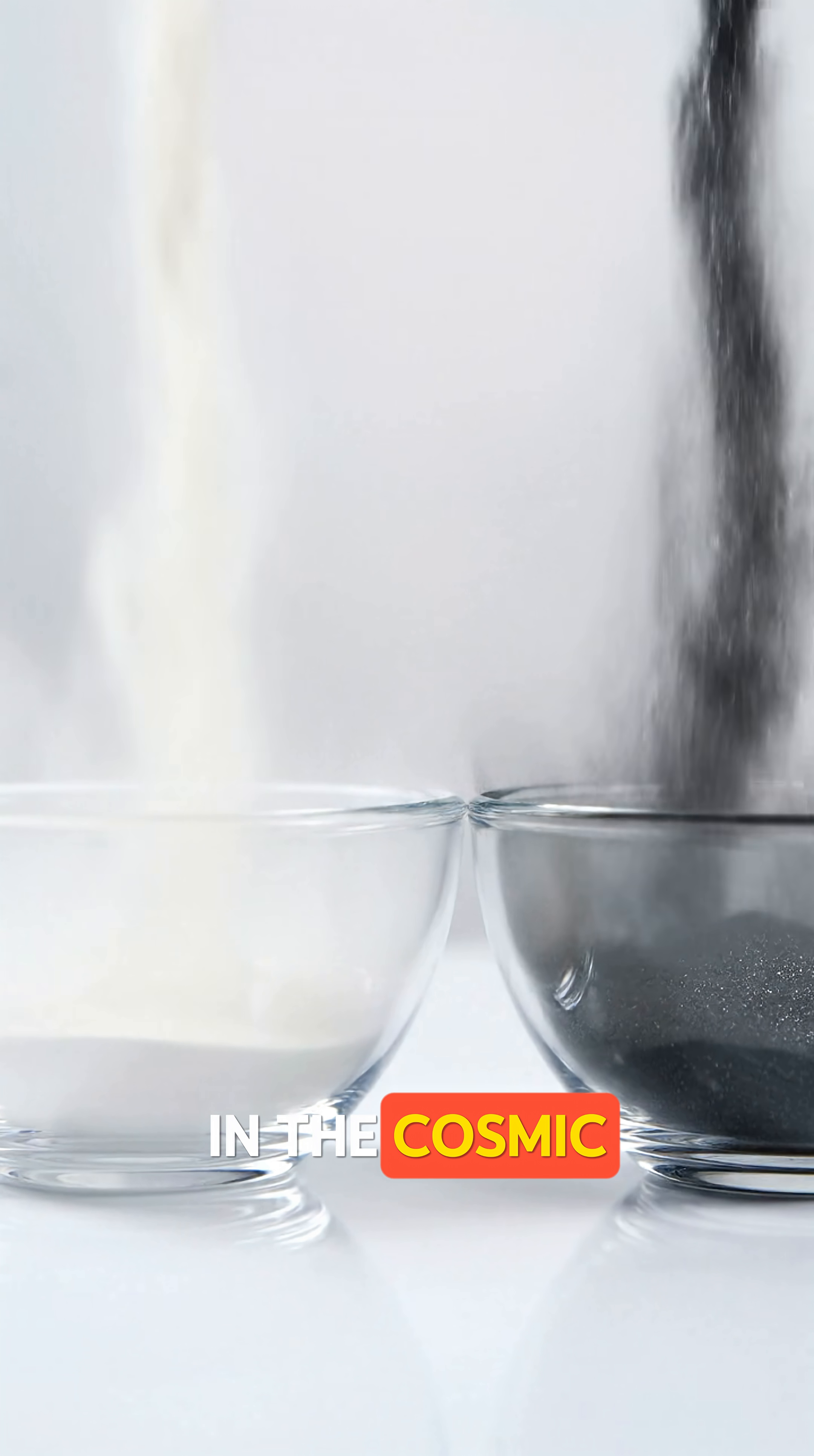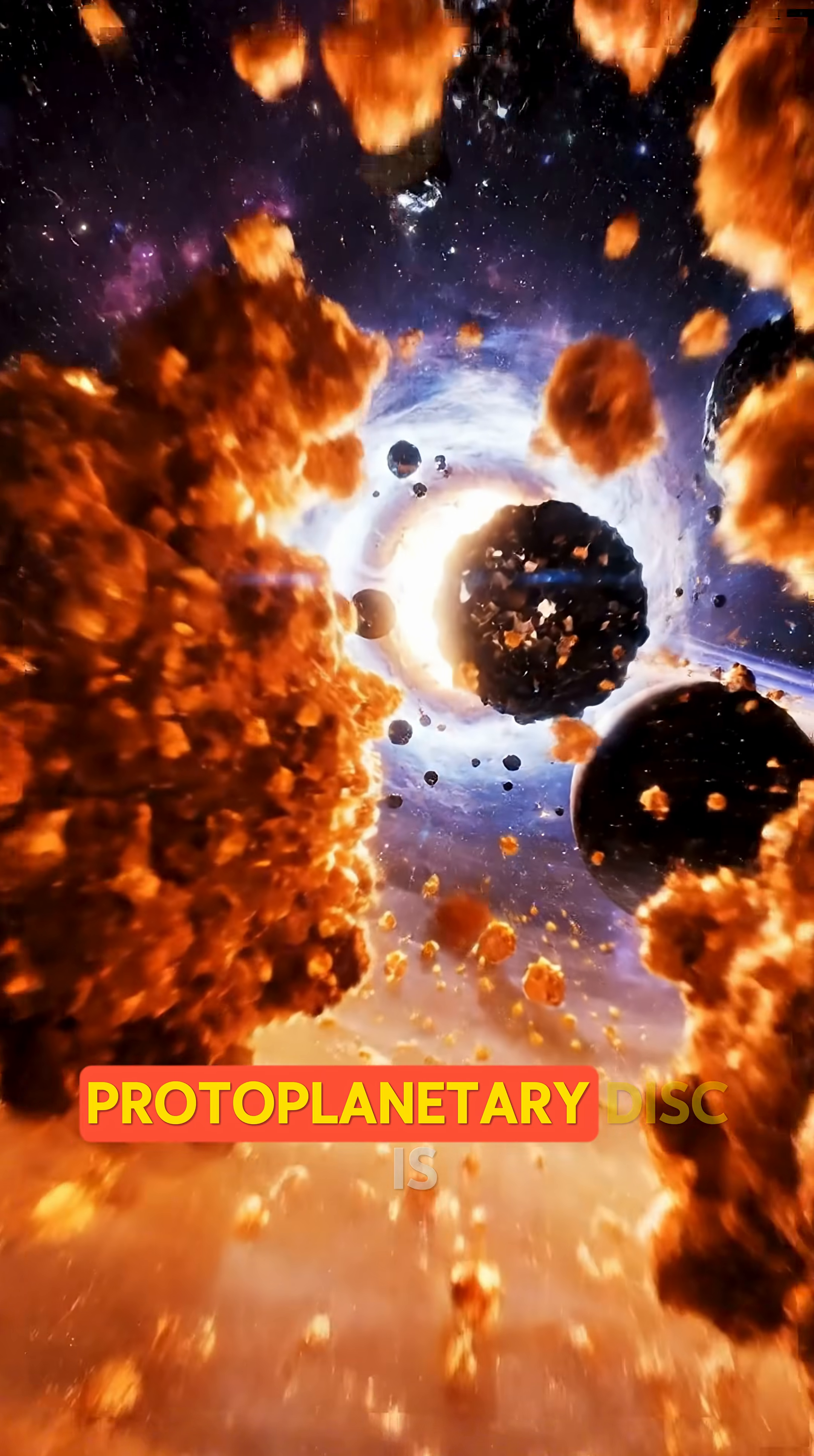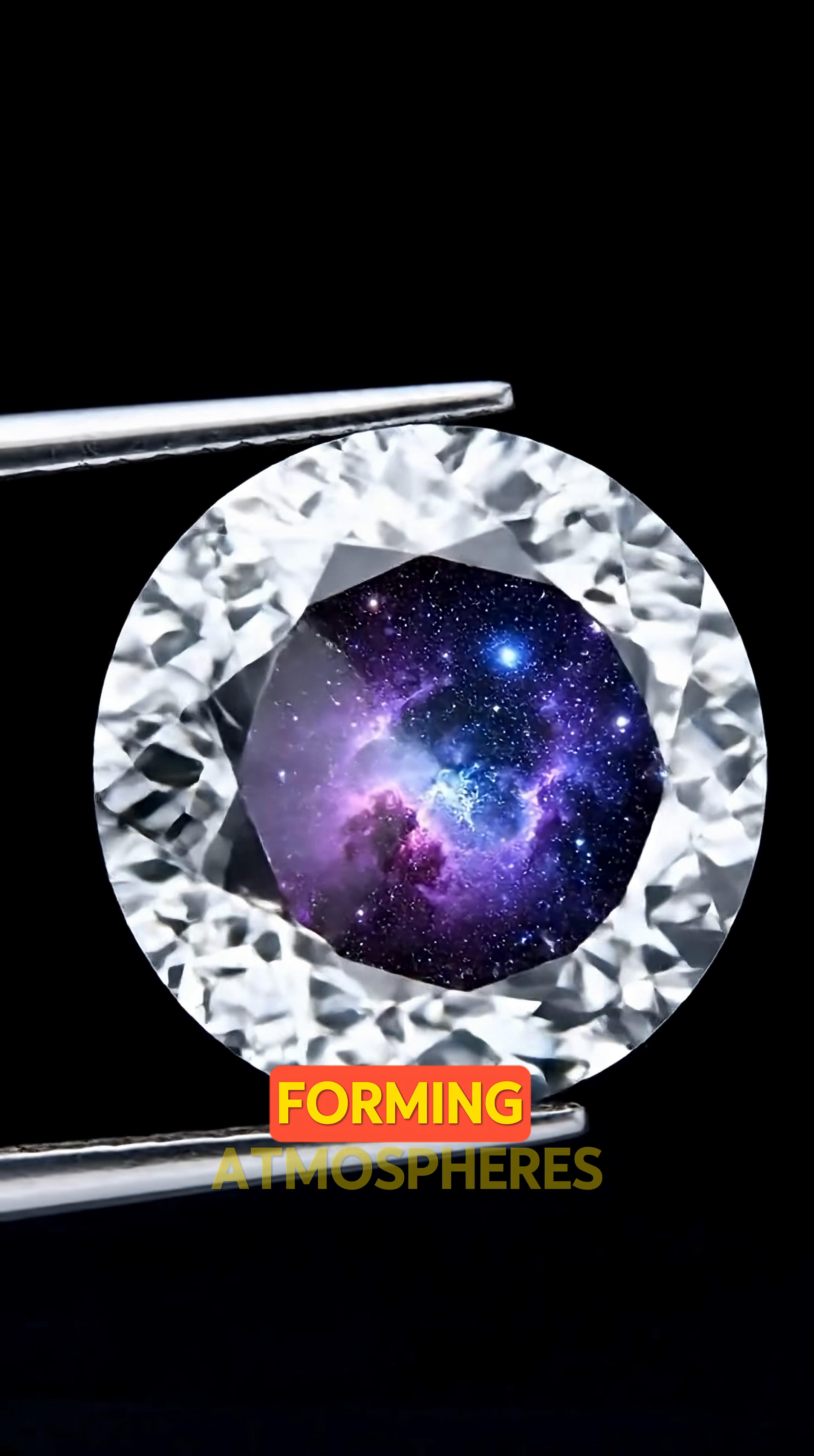The answer lies in the cosmic kitchen where the planet was born. It all depends on the ingredients available. If a solar system's protoplanetary disk is richer in carbon than oxygen, it can form carbon-based worlds, while a silicate-rich disk can create planets with glass-forming atmospheres.